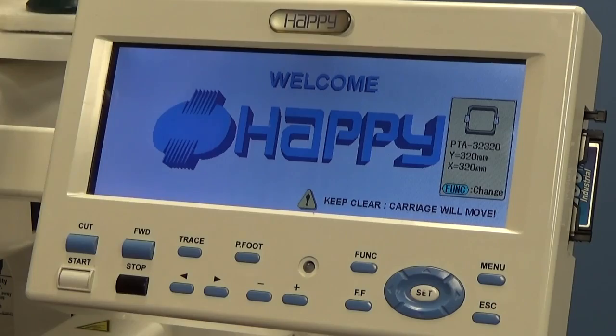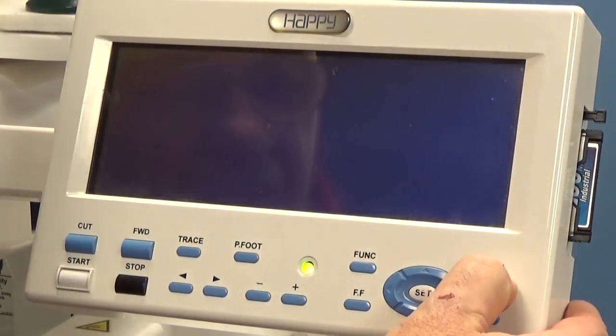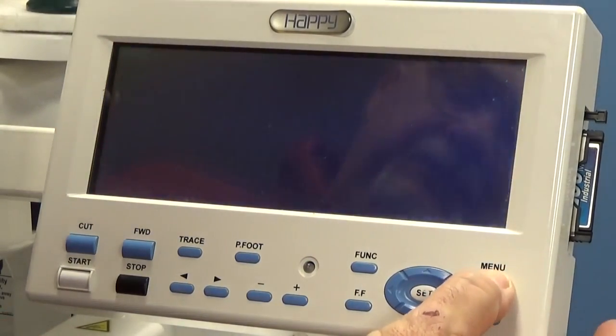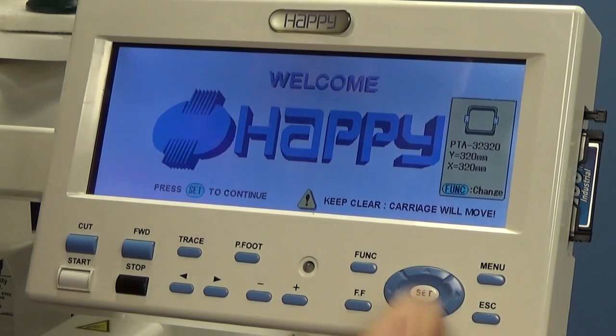At this time, we're just going to go ahead and turn the machine back off. We're going to press our menu button in. We're going to turn the machine on again. We're going to put it back in maintenance mode again. Press set.